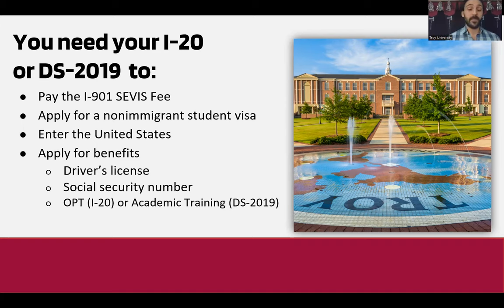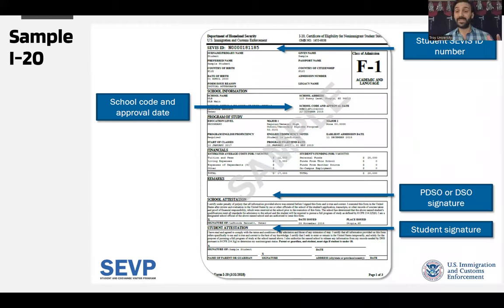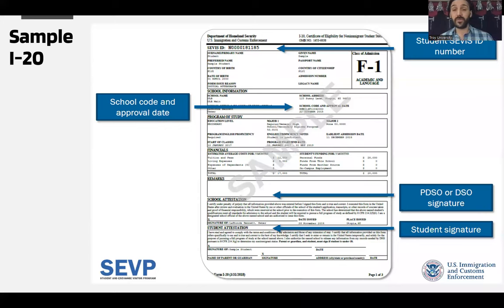Here is a sample I-20. The SEVIS ID is in the top-left corner — it is a unique ID only for you, and you will need it when you pay the I-901 fee and when you complete the DS-160 form. The school code, shown in the middle of the screen, is also important because when you go to your visa interview you can only go for one school.